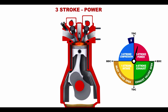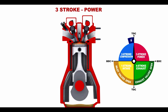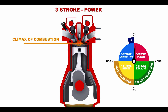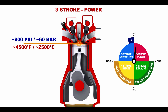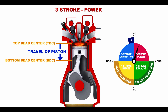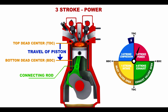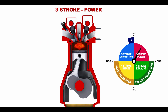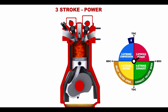The third stroke is the power stroke. This is the climax of combustion. The combustion process generates a large amount of heat, and the cylinder pressure can get up to 900 psi. The pressure of expanding gases causes the piston to move from top dead center to bottom dead center and turn the crankshaft via the connecting rod, thereby converting thermal energy into mechanical work. The stroke completes when the piston reaches bottom dead center.